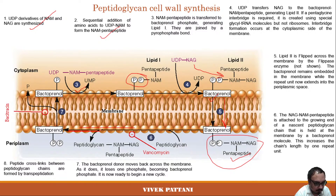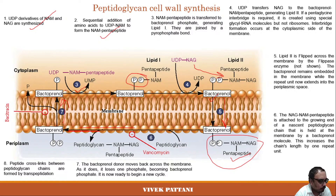After bactoprenol is released, it moves back to the cytoplasm and loses one phosphate, becoming bactoprenol phosphate again, which can be reused for continued peptidoglycan biosynthesis.